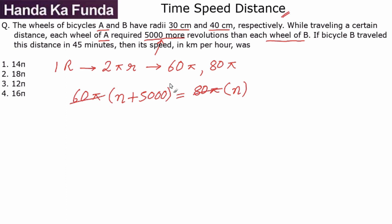So let's try and do that. 60π and 80π get cancelled with 3 and 4, so 3n plus 15,000 equals 4n, which gives me the number of revolutions as 15,000 for the second one and 20,000 for the first one.